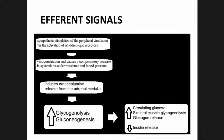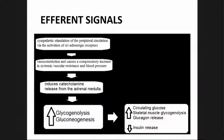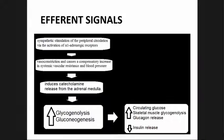Sympathetic stimulation of the peripheral circulation via activation of alpha-1 adrenergic receptors causes vasoconstriction and a compensatory increase in systemic vascular resistance and blood pressure, and induces catecholamine release from the adrenal medulla, which causes an increase in glycogenolysis and gluconeogenesis. This results in increased circulating glucose, skeletal glycogenolysis, and glucagon release, along with decreased insulin release.